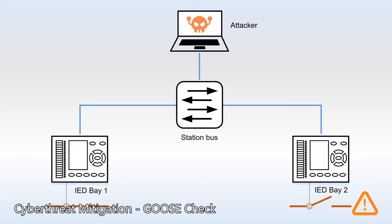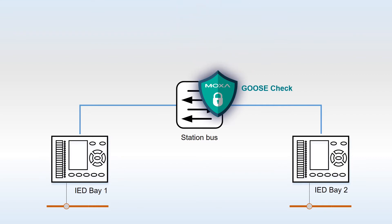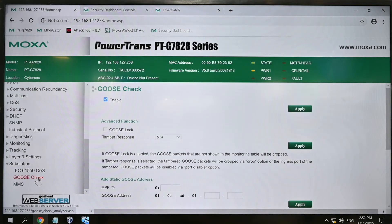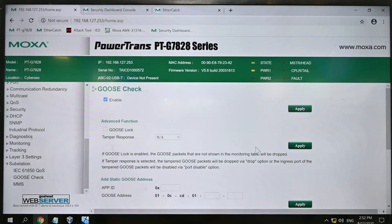It's not practical to put firewalls between IEDs because it would add unacceptable latencies. So our solution is based on the Ethernet switch. Moxa PT series provides a special feature called GOOSE Check. It recognizes GOOSE protocols, remembers legitimate flows, and detects anomalous activities. During the commissioning stage, we can verify that all GOOSE flows are legitimate via the switch user interface. Then we can lock it by enabling GOOSE Lock and tell the switch to drop abnormal GOOSE messages.